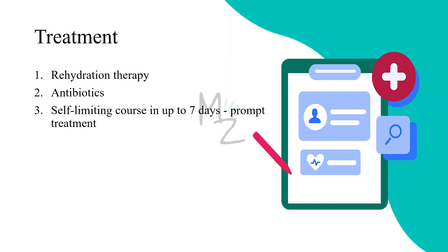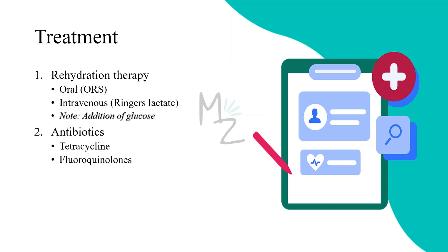Treatment. First, prompt rehydration therapy; then administration of antibiotics. When prompt treatment is instituted, the disease runs a self-limiting course in up to 7 days. Rehydration requires adequate replacement of water and electrolytes — either orally using ORS (oral rehydration salts) or intravenously using Ringer's lactate. Glucose is added to the solution to enhance uptake of water and electrolytes. Antibiotics like tetracycline and fluoroquinolones are used.